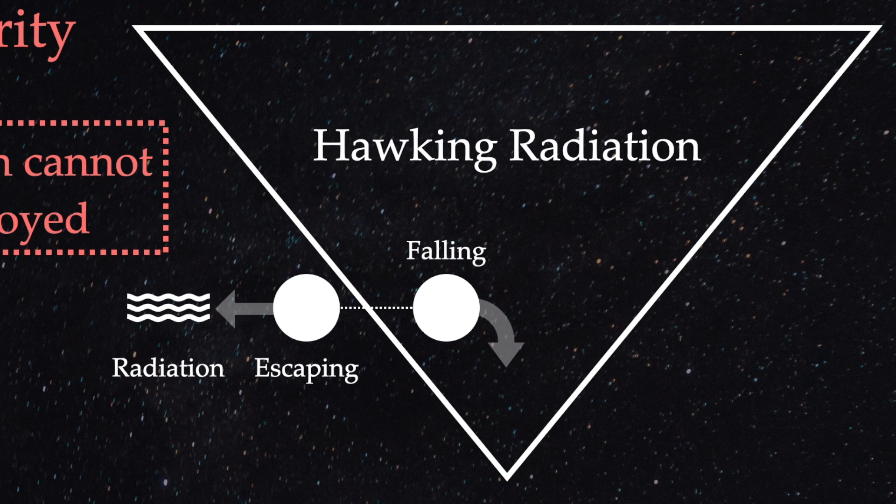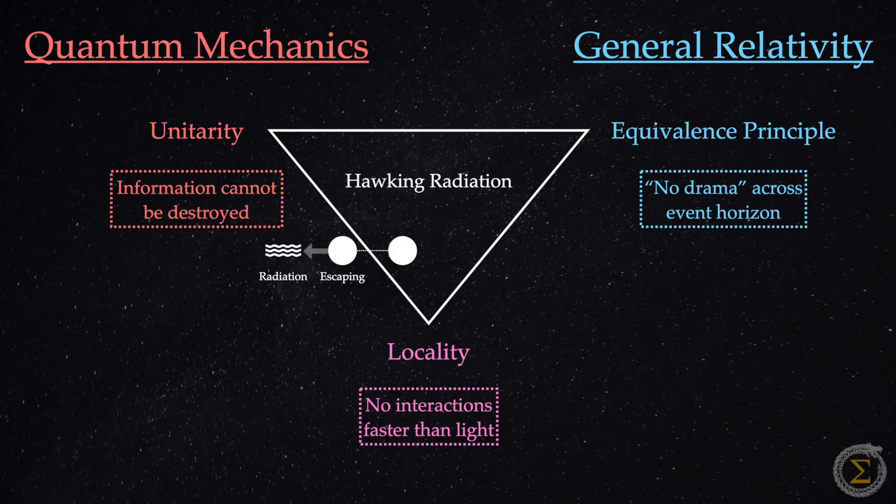You see, the escaping particle effectively borrows energy from the black hole. The particle that falls into the black hole carries negative energy relative to the outside universe, which results in a decrease in the black hole's mass. According to Hawking's calculations, this emitted radiation appears to carry no information about the matter that fell into the black hole, which violates unitarity.